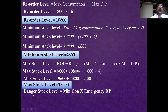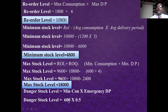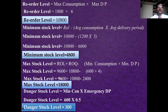Danger stock level = minimum consumption × emergency delivery period = 600 × 0.5 = 300 units. So 300 is the danger level quantity.